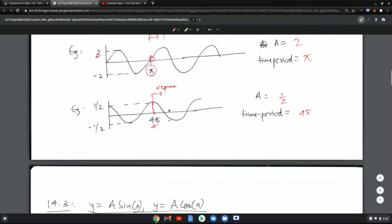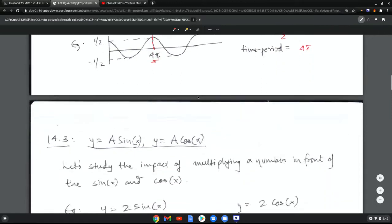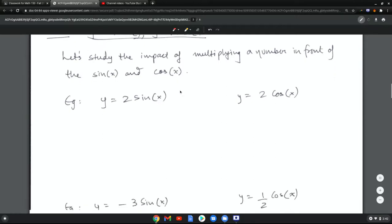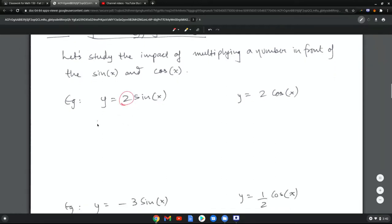So that's the basic definition of time period and amplitude. Now let's study the impact of multiplying a number in front of sine x and cosine x. If I multiply 2 in front, what this does is, since it's a sine, I know the shape is the same. The amplitude now is 2. So this number causes the amplitude to change, which makes this 2 and the lowest value negative 2. The time period remains the same, so it's 2 pi. So these points, the five points, are going to be 0, 2 pi. Half of 2 pi is pi, then half of that is pi over 2.